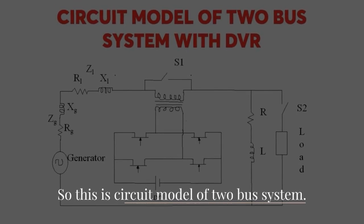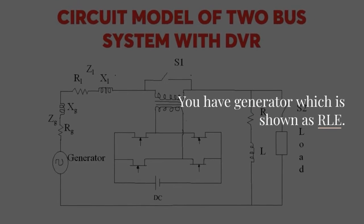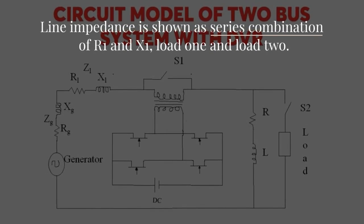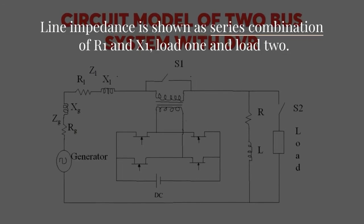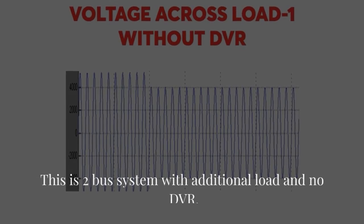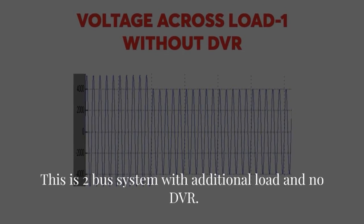So this is circuit model of two bus system. You have generator which is shown as RLE. Line impedance is shown as series combination of R1 and X1, load 1 and load 2. This is two bus system with additional load and no DVR.